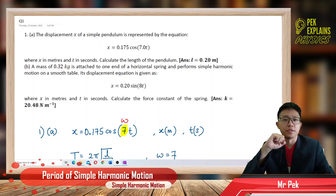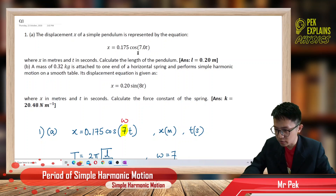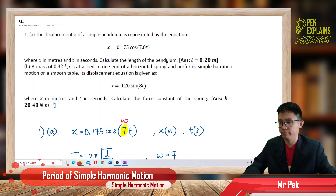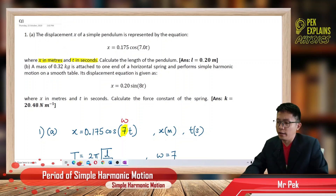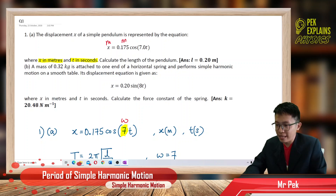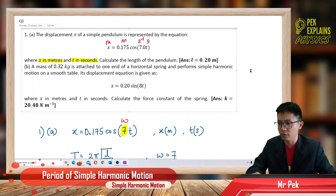We are in the period of simple harmonic motion. The first question: the displacement x of a simple pendulum is represented by the equation x = 0.175 cos(7t), where x is in meters and t is in seconds. Calculate the length of the pendulum. Be careful with the unit — if x is in meters, the amplitude is in meters; if time is in seconds, omega is in per second. If displacement is in cm, your amplitude must be in cm.